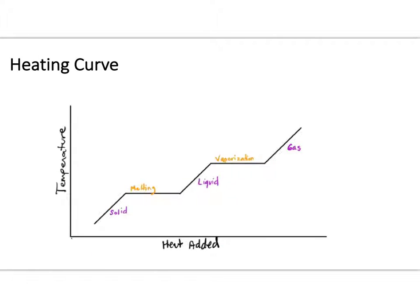Heating curves have several main components: temperature along the y-axis, heat energy added along the x-axis, sloped line segments representing phases of matter (solid, liquid, or gas), and plateaus representing phase changes. There are different slopes associated with the states of matter versus the actual phase changes themselves.